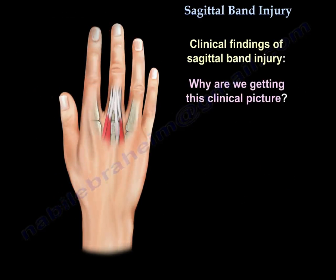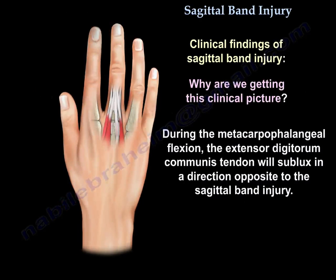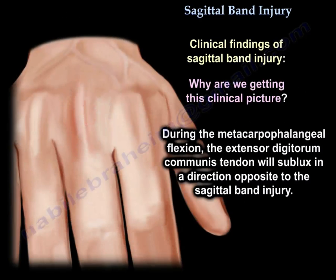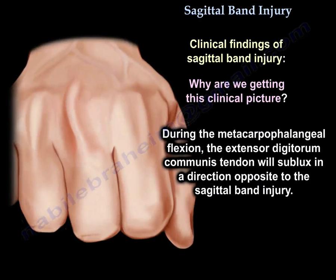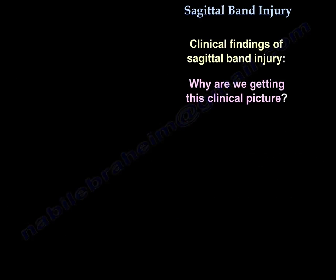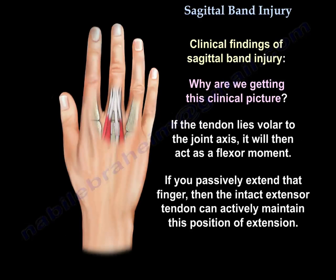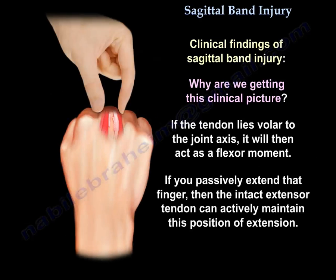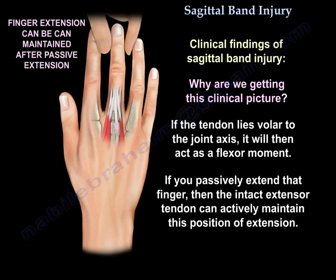Why are we getting this clinical picture? Because during metacarpophalangeal flexion, the extensor digitorum communis tendon will sublux in a direction opposite to the sagittal band injury. If the tendon lies volar to the joint axis, it will then act as a flexor moment. If you passively extend that finger, then the intact extensor tendon can actively maintain this position of extension.